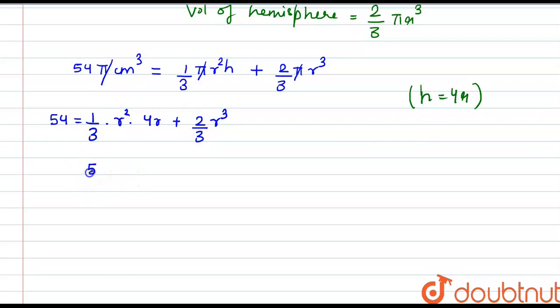It comes to as 54 is equal to 1 by 3 into r cubed into 4 plus 2 by 3 r cubed. So this is equal to 4 by 3 plus 2 by 3 is 2 r cubed. So we have the value of r cubed equal to 27, so the value for r is equal to 3 cm.